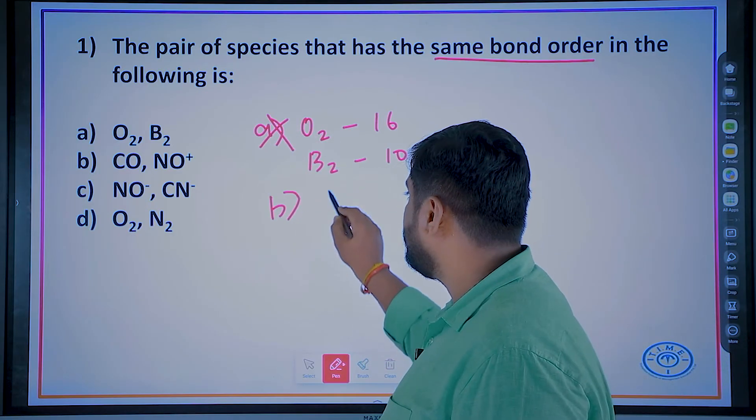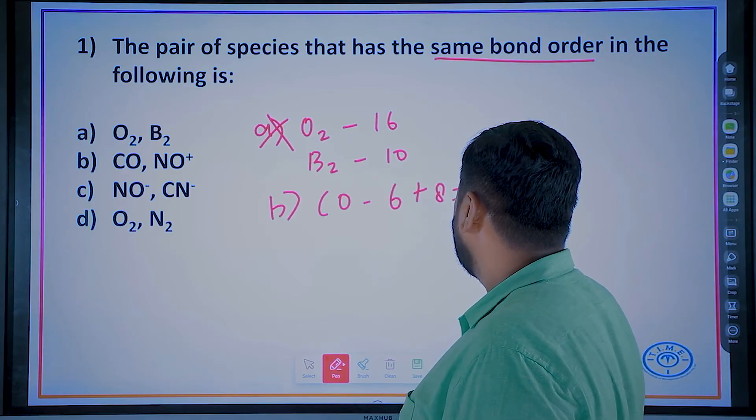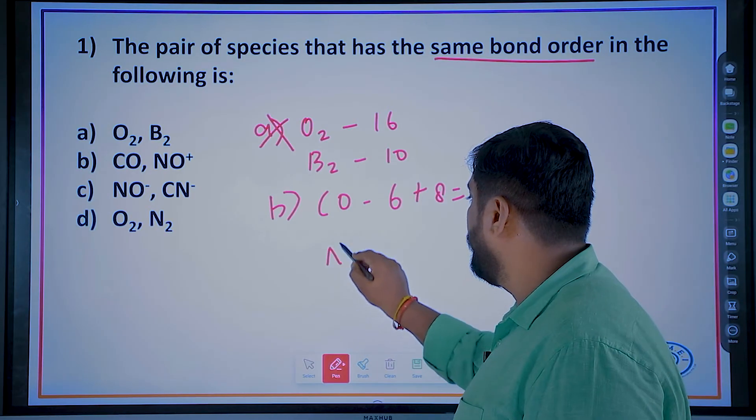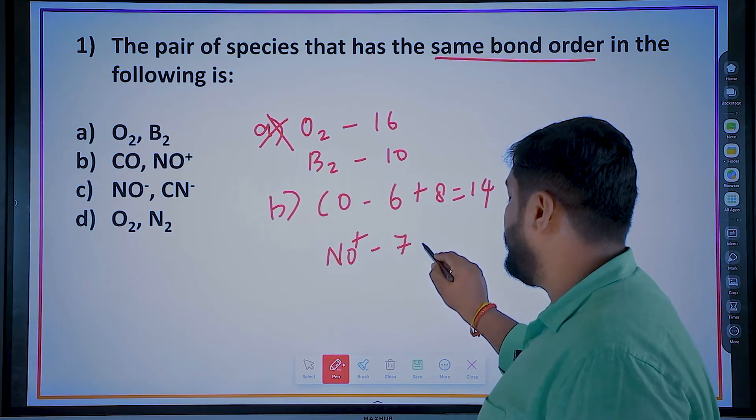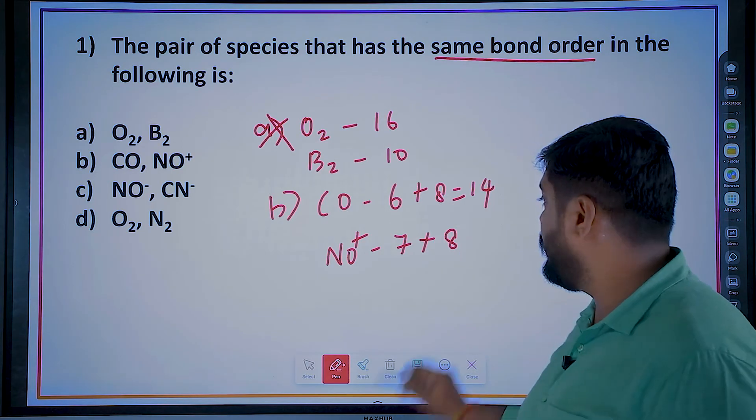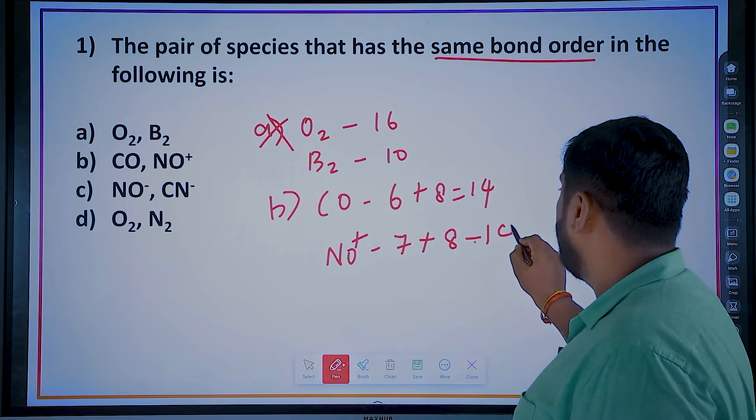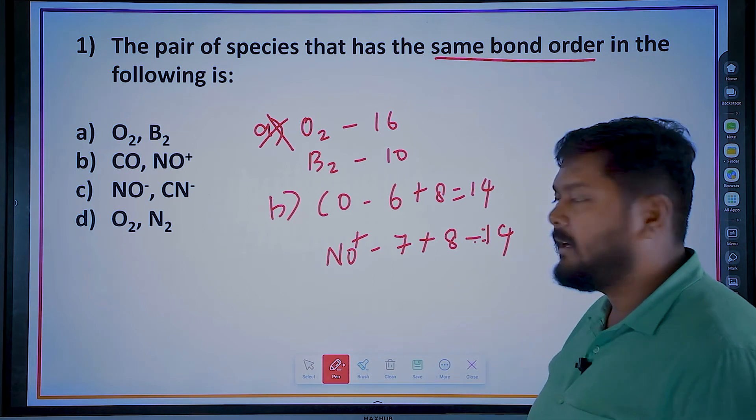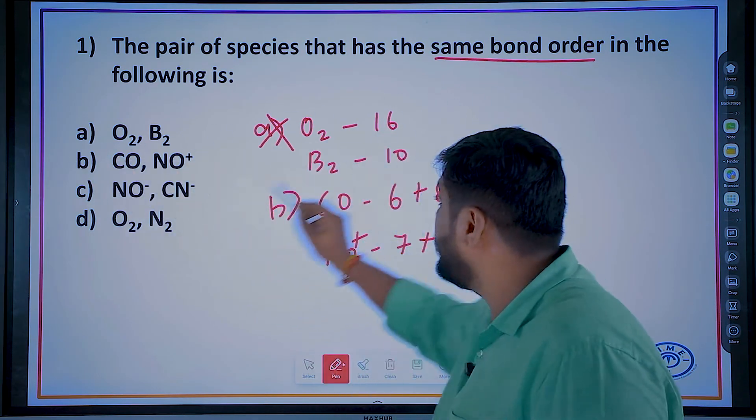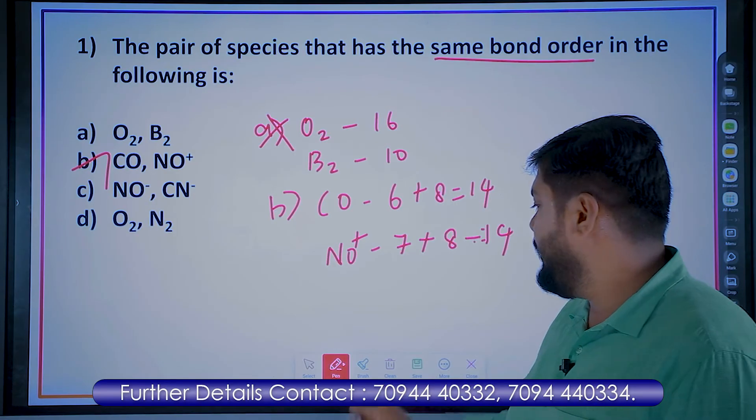And option B, CO: carbon will have 6 electrons and oxygen will have 8 electrons. So CO will have 14 electrons. And NO+: nitrogen will have 7 electrons and oxygen will have 8 electrons. Plus means you have to reduce 1. So it will have 14 electrons. NO+ will have 14 electrons. Which of the following will have same bond order? CO and NO+ will have same bond order.